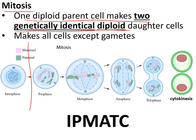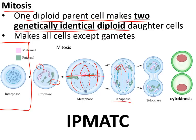Mitosis starts with interphase — the day-to-day life of the cell — then prophase, in which the nucleus breaks down and spindle fibres start to appear. During metaphase the spindle fibres are fully formed and chromosomes align along the centre of the cell. In anaphase the chromosomes move to each end of the cell down the spindle fibres. In telophase a new nucleus forms around each set of chromosomes. Finally, cytokinesis occurs where new cell membranes form and the cell is fully separated.